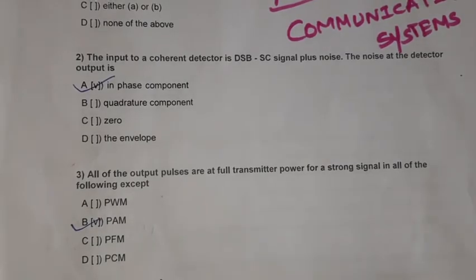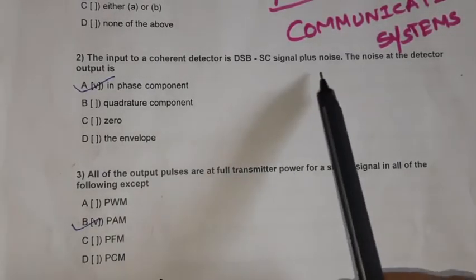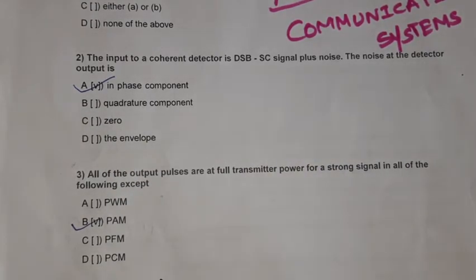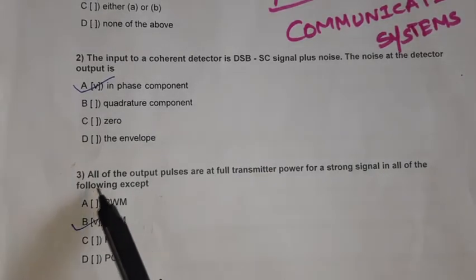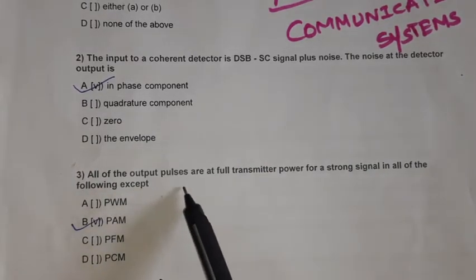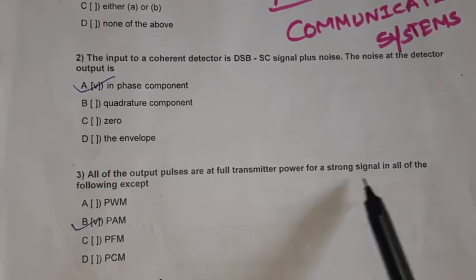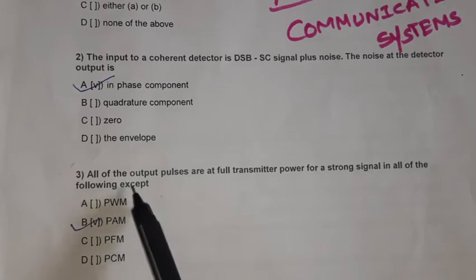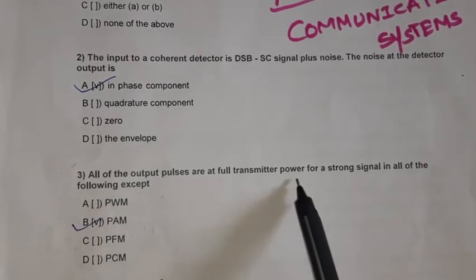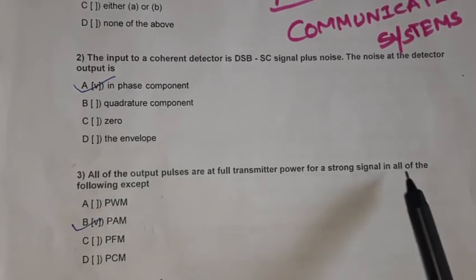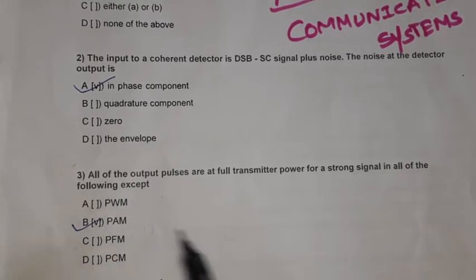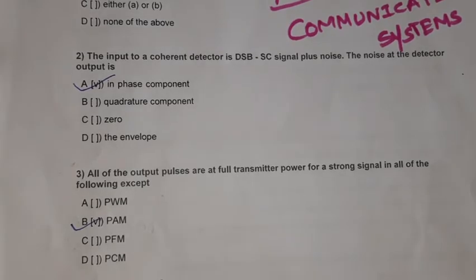Question 2: The input to a coherent detector is a DSB-AC signal plus noise. The noise at the detector output is the in-phase component — Option A, in-phase component. Question 3: All of the output pulses are at full transmitter power for a strong signal in all of the following except — the answer is PAM, pulse amplitude modulation.